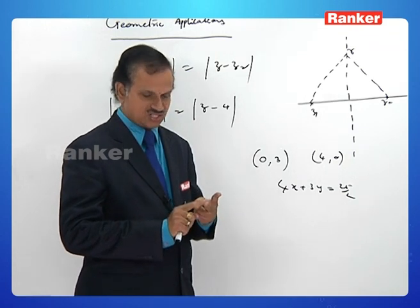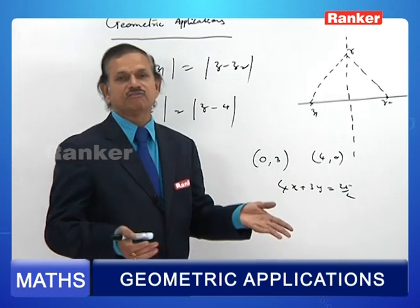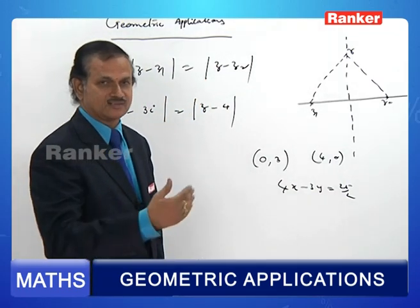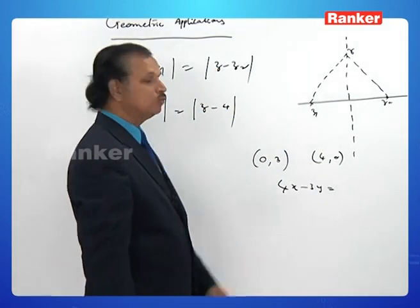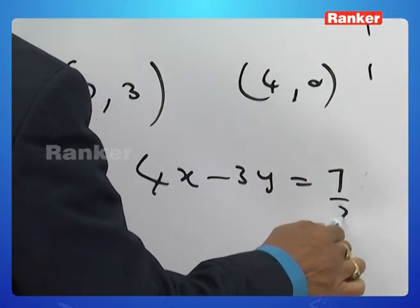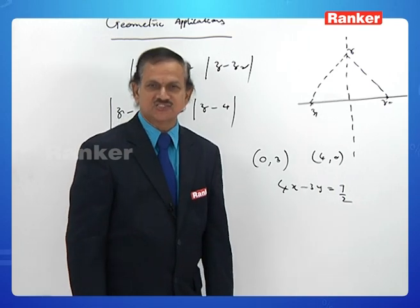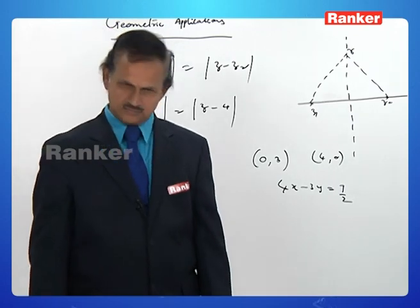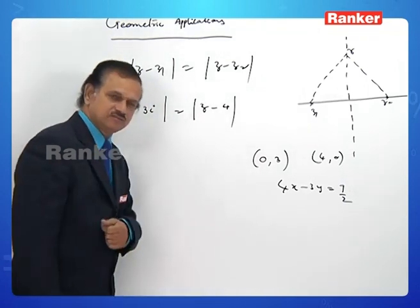The perpendicular bisector has two parts: perpendicular (giving the slope) and bisector (passing through the midpoint). The slope of the line joining (0,3) and (4,0) is -3/4, so the perpendicular slope is 4/3, meaning the line starts with 4x - 3y. Passing through midpoint (2, 3/2): 4(2) - 3(3/2) = 8 - 9/2 = 7/2. So 4x - 3y = 7/2 is the correct answer. We know that |z - z1| = |z - z2| means z lies on the perpendicular bisector of z1 and z2.